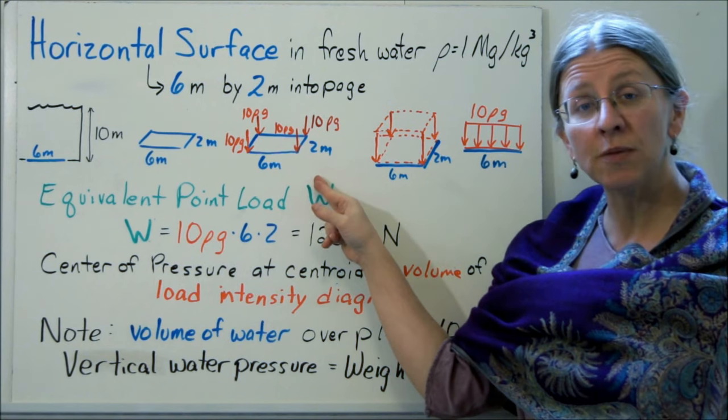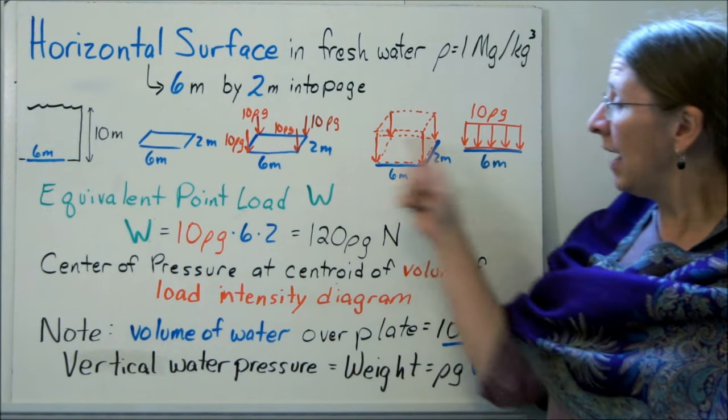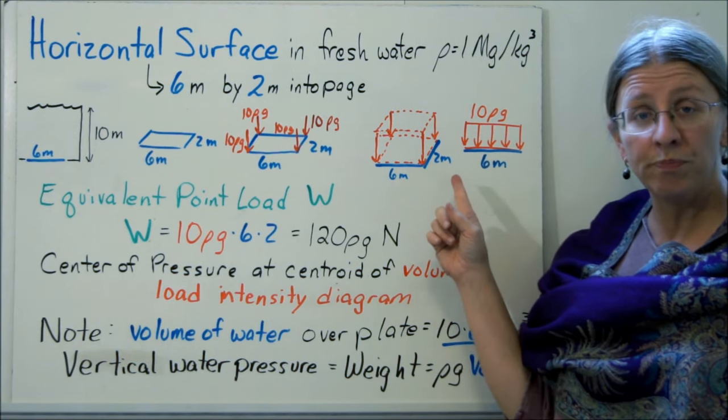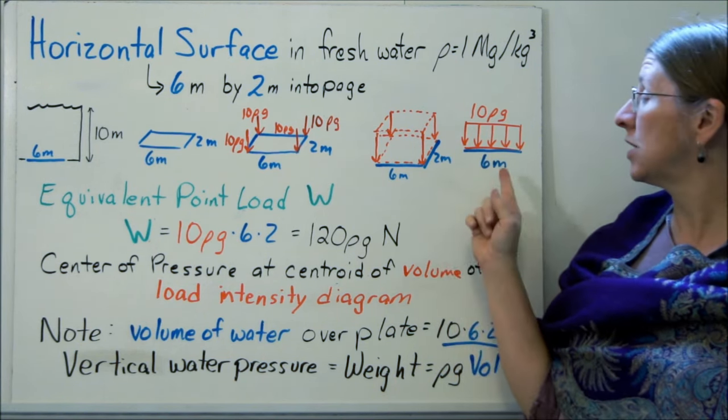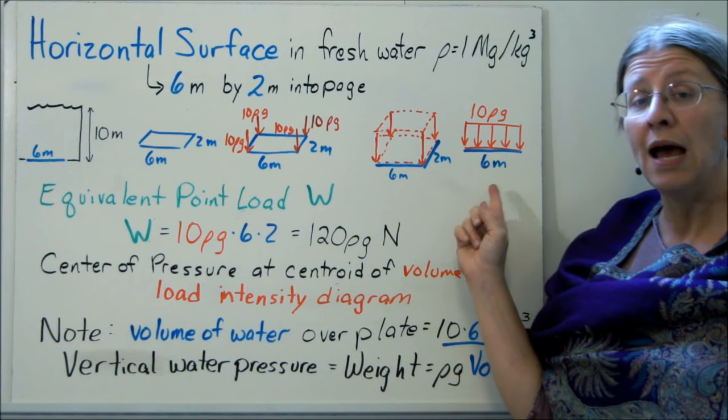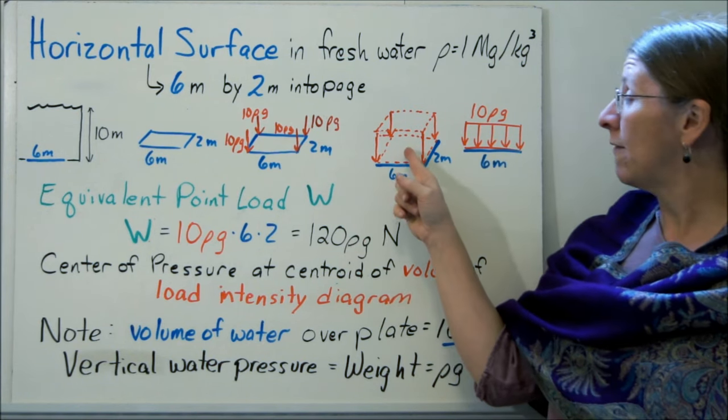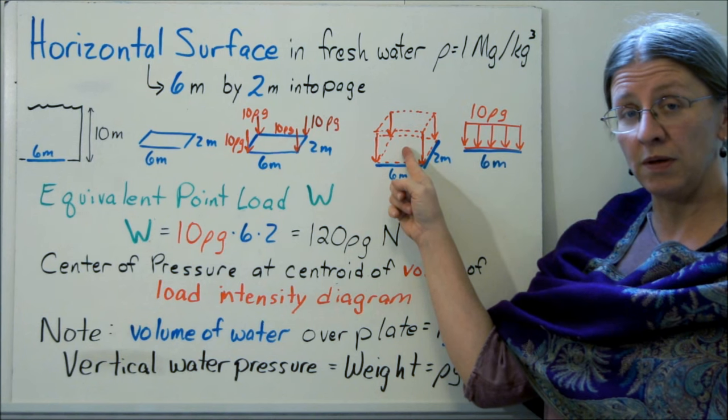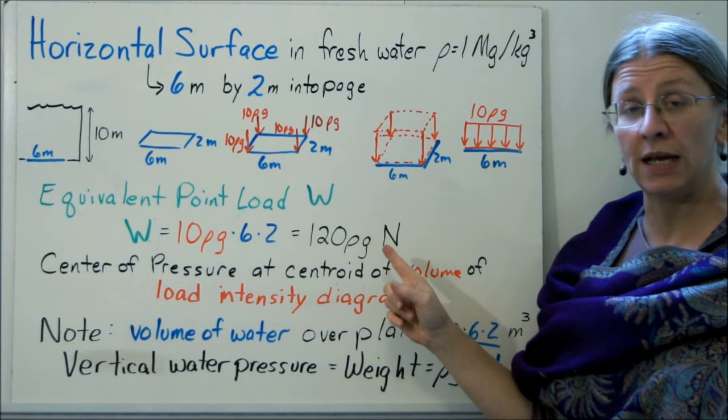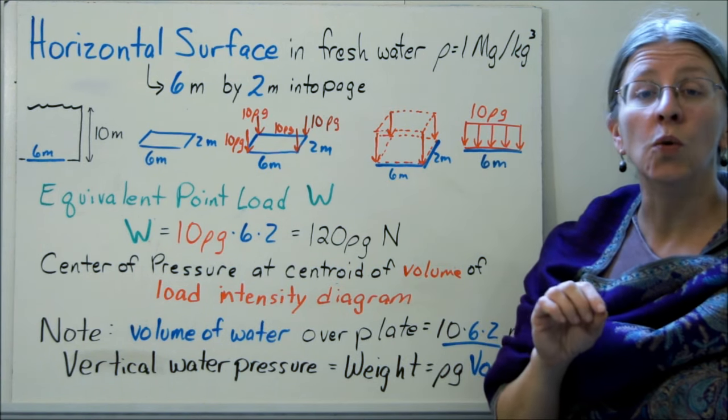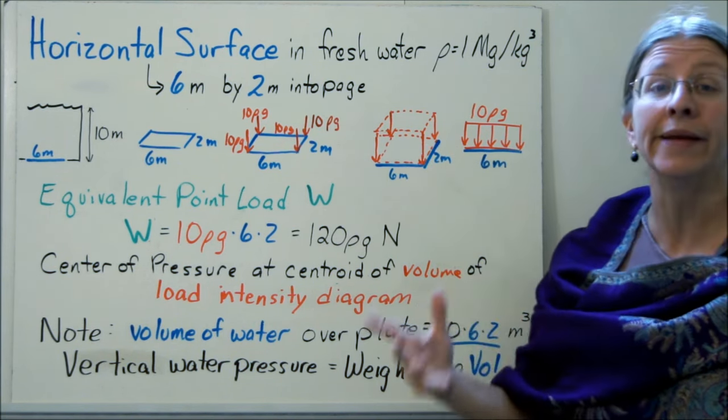I want to identify the pressures at the boundaries. If I look at my four corners, they're all at 10 meters down, so all of the pressures are 10ρg. That gives me a load intensity diagram that's just a rectangular prism. Because it's the same as you go into the page, we usually treat these as two-dimensional objects, so I have a uniform distributed load acting over the 6 meter length with the 2 meters into the page. My equivalent point load is the volume of this load intensity diagram. So W is 10ρg times 6 times 2, or 120ρg. The center of pressure is where your equivalent point load acts. That's going to be at the centroid of the load intensity diagram, so the centroid of this volume is in the middle of the plate.